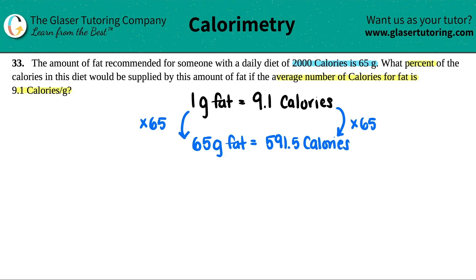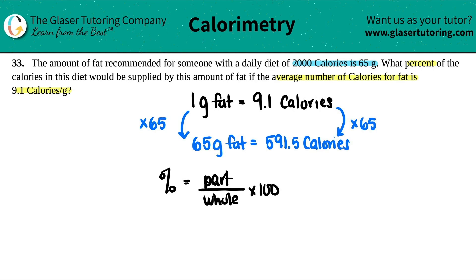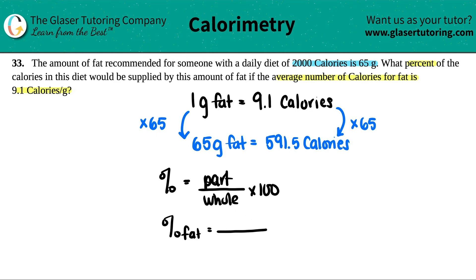So this is saying the recommended amount of fat someone should ingest per day is 65 grams, and that is approximately 591.5 calories we will get from eating that fat. Now let's find out what percent of the total calories comes from fat. Remember, a percent is just part divided by whole times 100. In this case, since we don't know the total grams, we'll work in terms of calories — calories for fat divided by total calories, times 100.